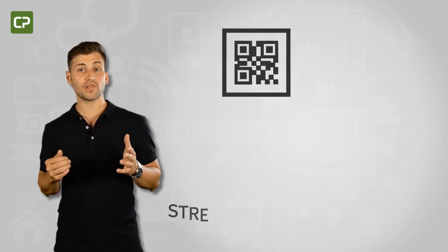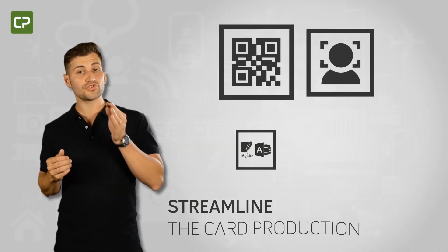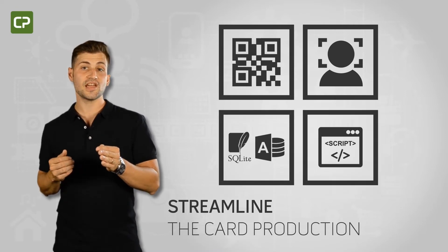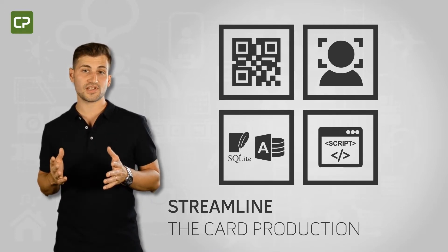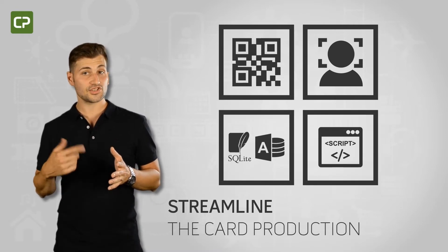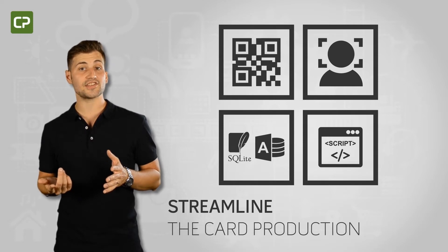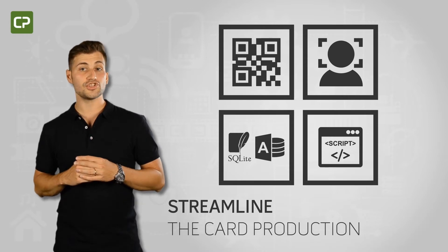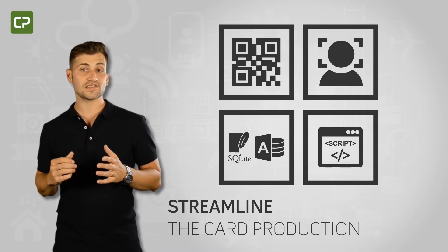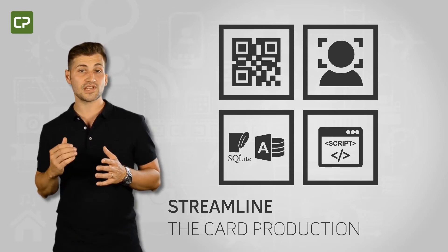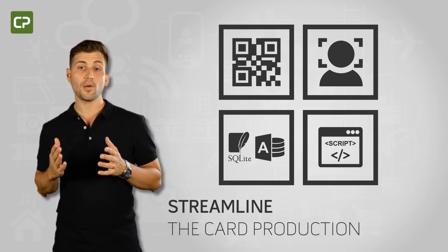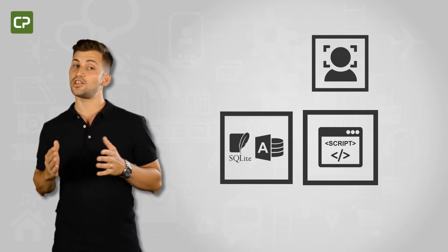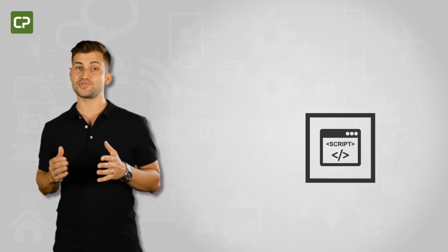XM Edition streamlines and responds to your photo ID printing needs by automating the photo editing process, connecting directly to your MS Access and SQLite database, and allowing you to personalize the card printing workflow to your needs through script. These features translate into fewer mistakes, greater efficiency, better service and security, and a lot of time saved.